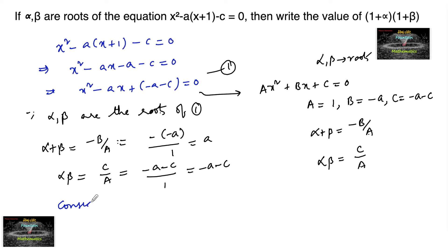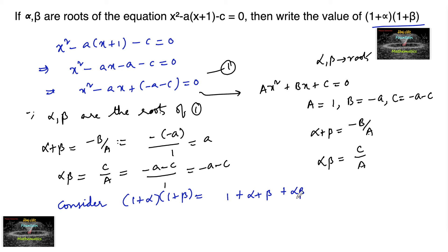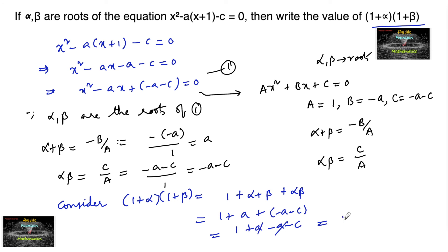Now for the required expression: (1 + alpha)(1 + beta) = 1 + alpha + beta + alpha·beta = 1 + a + (-a - c) = 1 + a - a - c. The a terms cancel, giving us 1 - c. So the value of (1 + alpha)(1 + beta) is 1 - c.